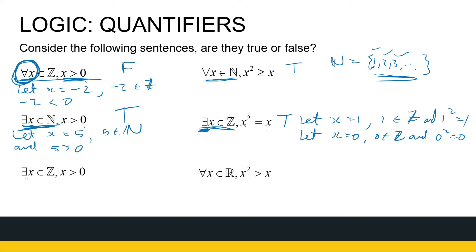Next: there exists an integer that's greater than zero. That's also true. Let x equal three: three is an integer and three is greater than zero. I've found one integer that's greater than zero — that's all I need. I know there are many, but I just need one.